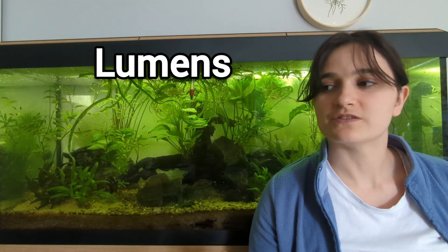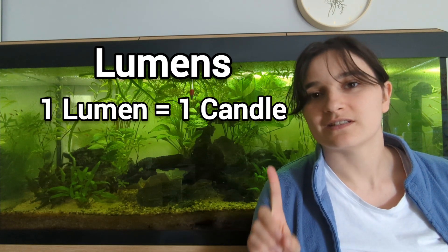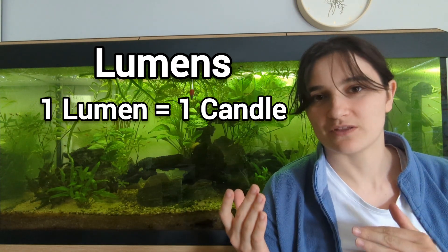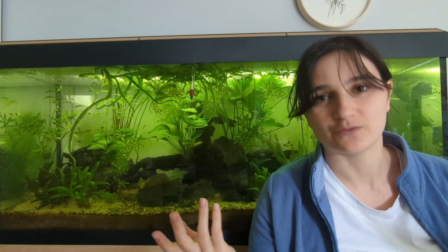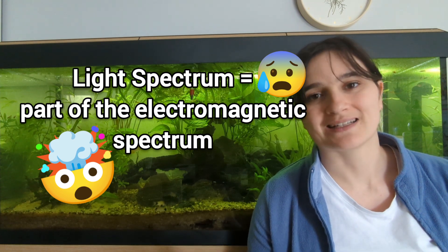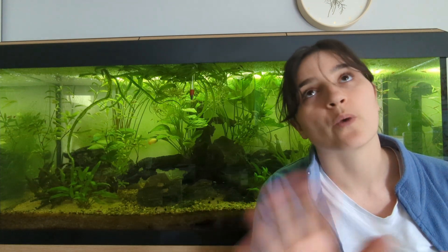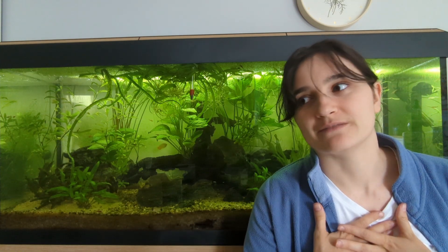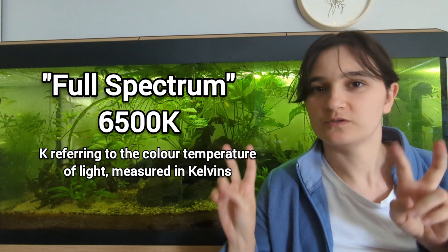The strength or brightness of a light bulb is measured in lumens — essentially one lumen is one wax candle's worth of light. The spectrum of light refers to a section of the wavelengths of the electromagnetic spectrum, but we don't need to worry about that. For our purposes, we just want to mimic sunlight. When you're looking for a light that mimics sunlight, you want full spectrum or 6,500K.